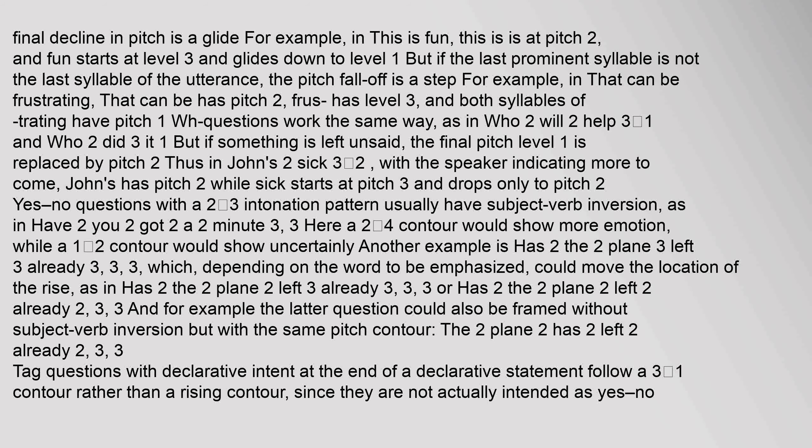Yes-no questions with a 2↑3 intonation pattern usually have subject-verb inversion. A 2↑4 contour would show more emotion, while a 1↑2 contour would show uncertainty. Tag questions with declarative intent at the end of a declarative statement follow a 3↓1 contour rather than a rising contour, since they are not actually intended as yes-no questions. But tag questions exhibiting uncertainty, which are interrogatory in nature, have the usual 2↑3 contour.